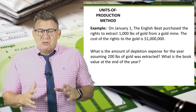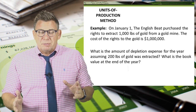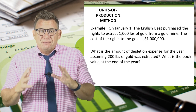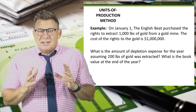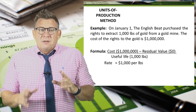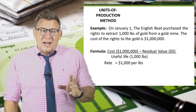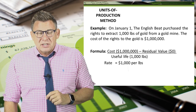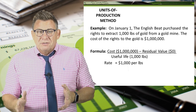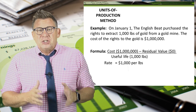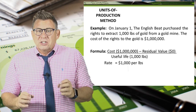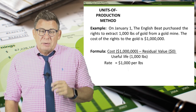Using the units of production method, let's calculate the amount of depletion expense assuming 200 pounds of gold was extracted in the first year. The formula is cost minus residual value divided by the useful life in units. The cost of $1 million divided by 1,000 pounds gives us a depletion rate of $1,000 per pound. So for every pound of gold extracted, $1,000 of depletion expense will be recorded.